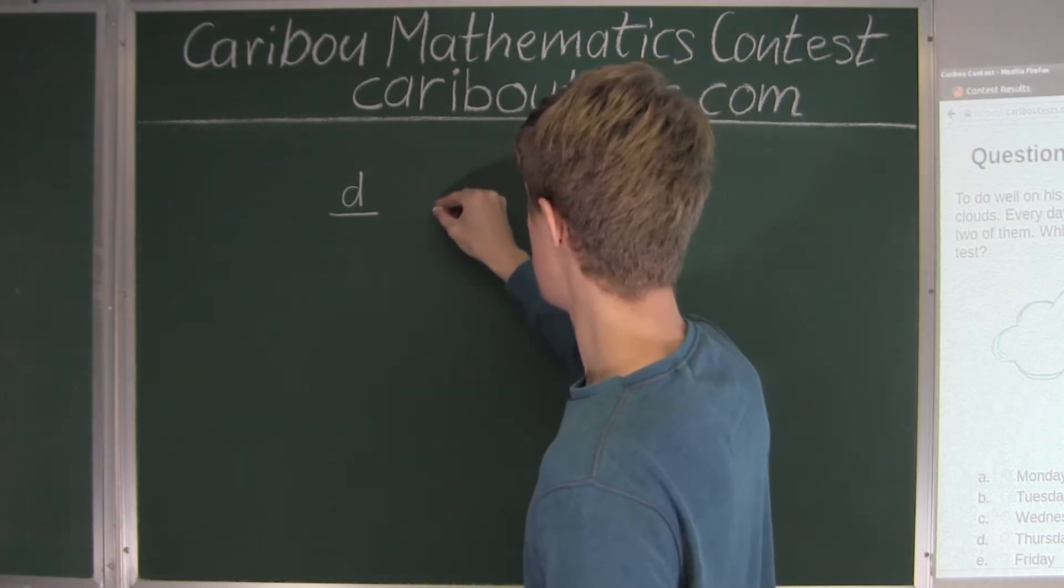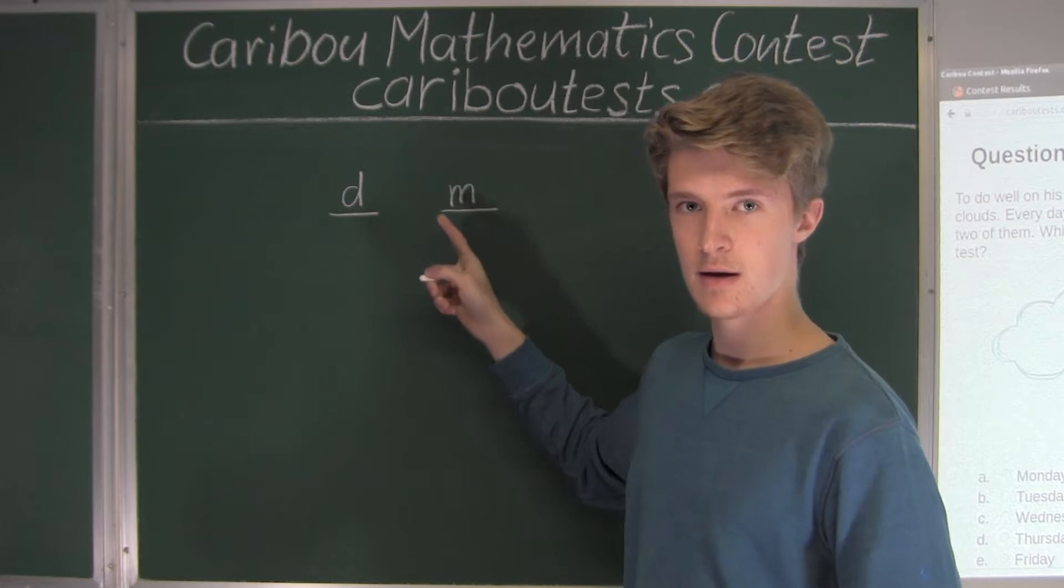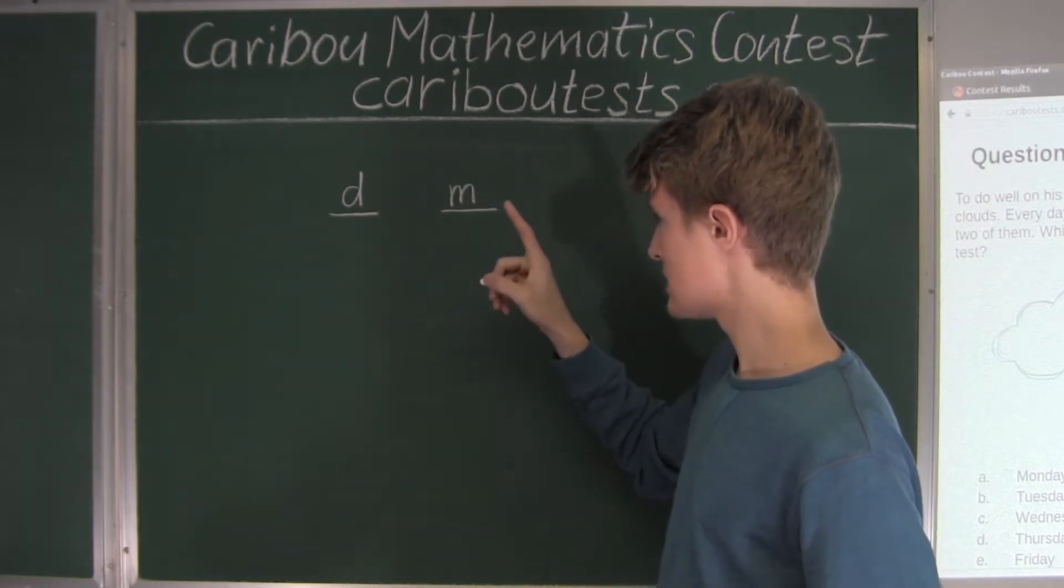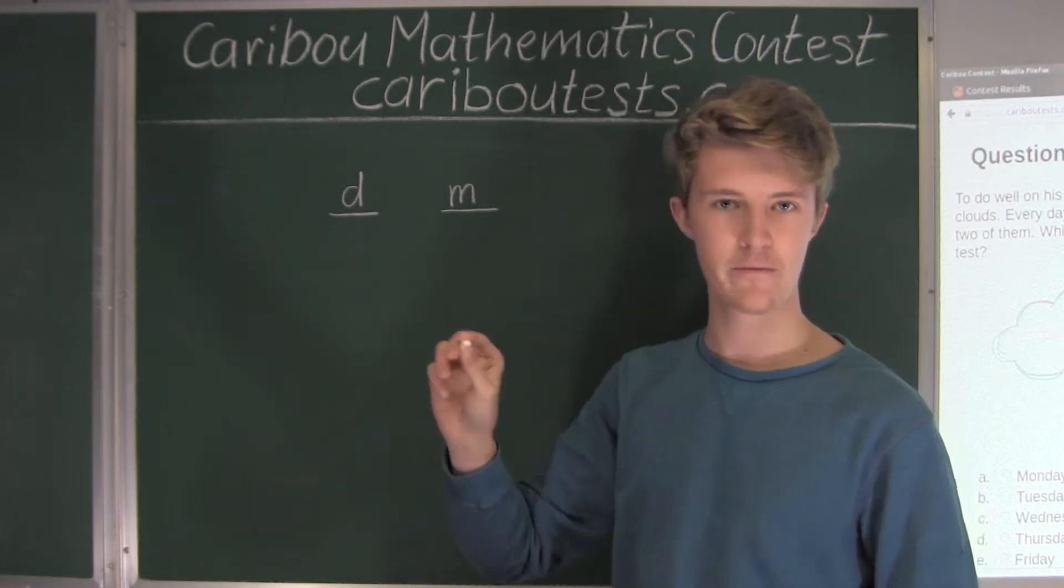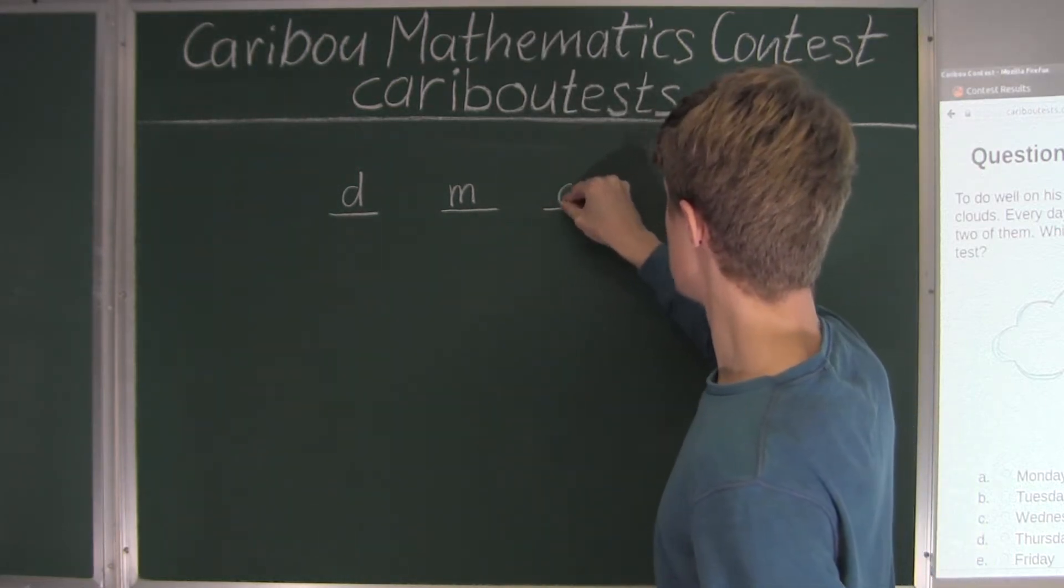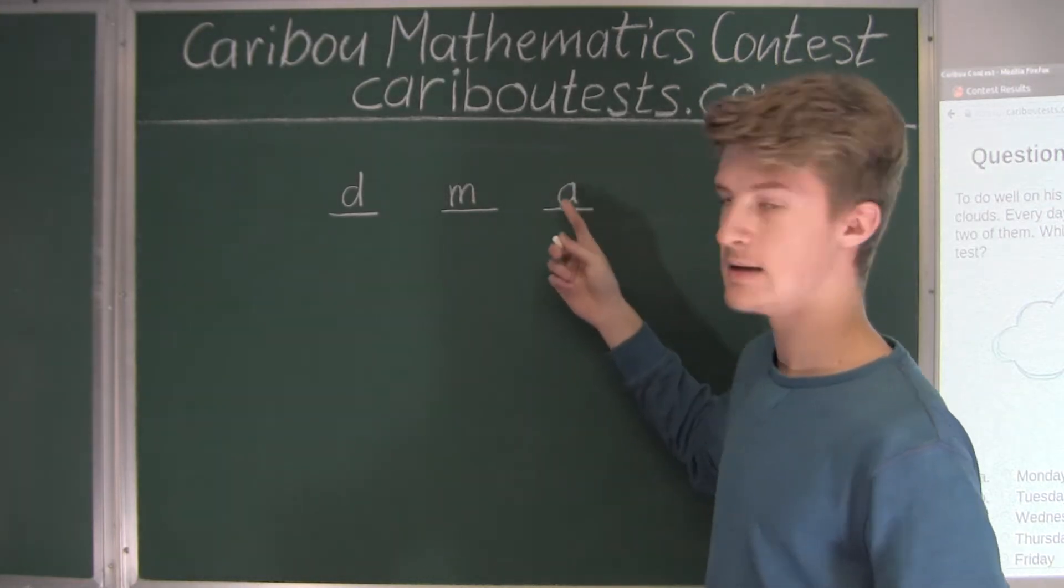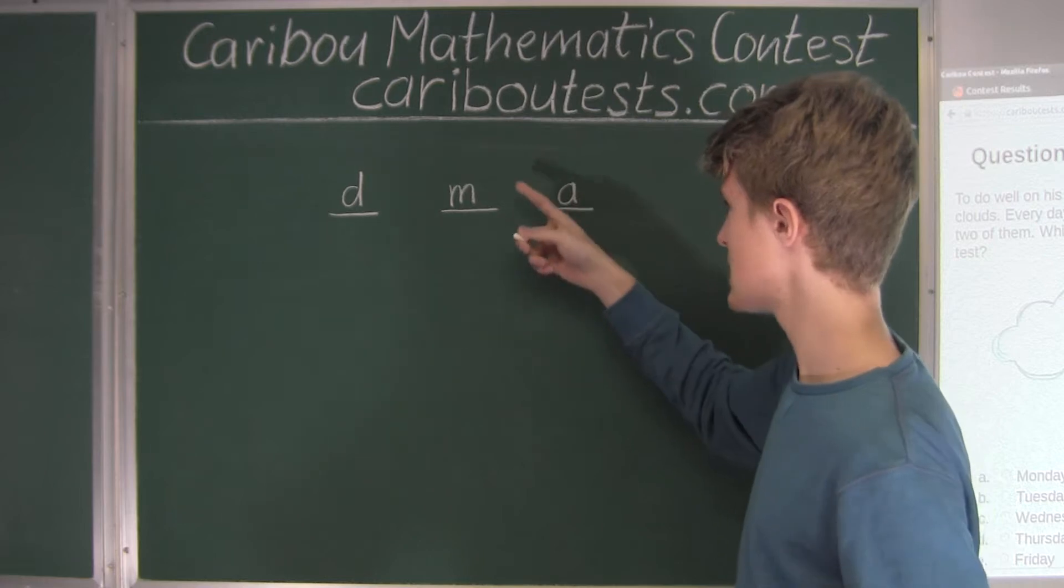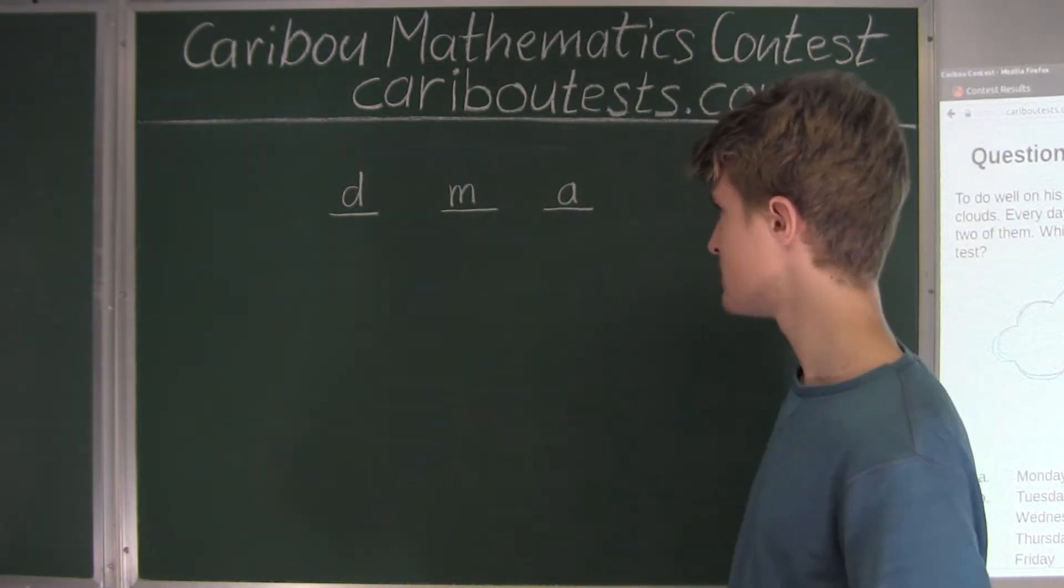Then we will have M, and M will stand for what he knows as soon as he wakes up before he learns anything, right in the morning. And then A represents the number of cloud types that he knows by the afternoon, which is after he has woken up and learned those 4 new cloud types.